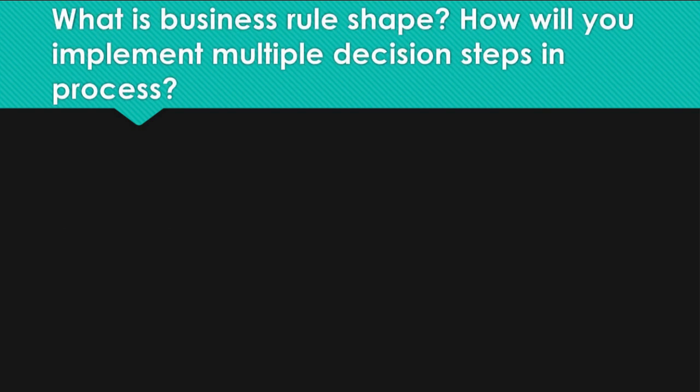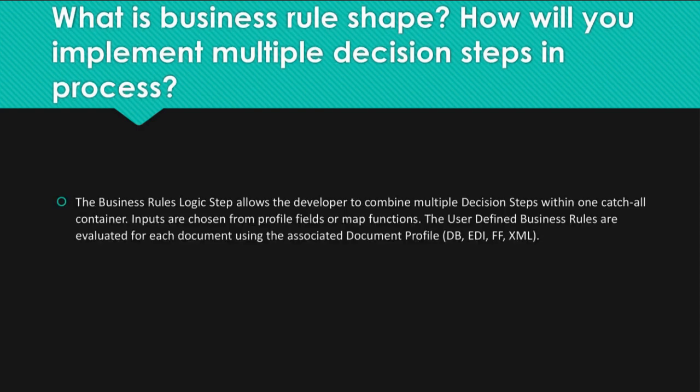Question: What is the business rule shape? How will you implement multiple decision steps in a process? Answer: The business rules logic step allows the developer to combine multiple decision steps within one catch-all container. Inputs are chosen from profile fields or map functions. The user-defined business rules are evaluated for each document using the associated document profile — DB, EDI, FF, or XML.